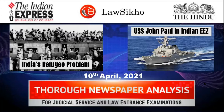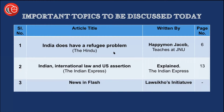Hello everyone and welcome to the daily newspaper analysis presented by Lawseekho. Today we have two articles to discuss. The first one is from The Hindu, titled 'India does have a refugee problem.' It talks about norms and various international treaties which India is or is not a member of, and how this creates confusion and changes the status of refugee people who seek refuge in our country, and what steps can be taken in this direction.